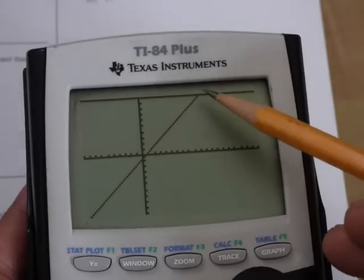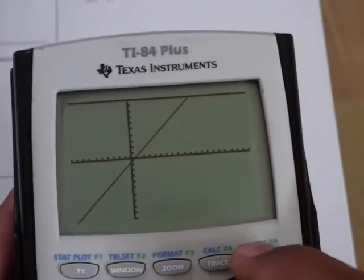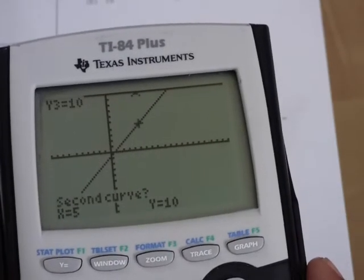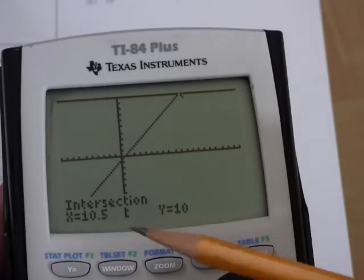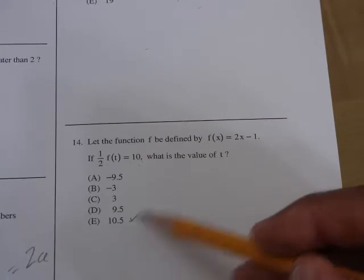OK, so there you can see it. Now the intersection is clearly in the window. So now I'm going to let the calculator find the answer. Second trace five and then enter three times: one, two, three. And it tells me that the intersection, in fact, is 10.5. So my answer here is 10.5.